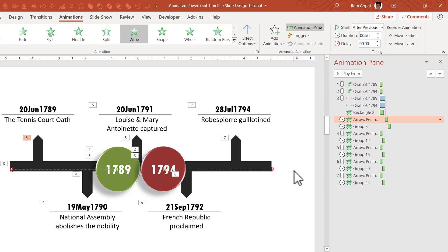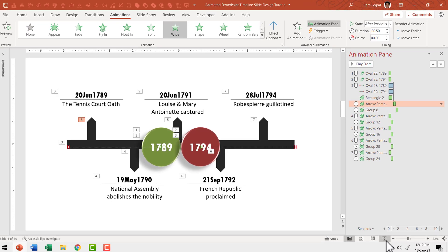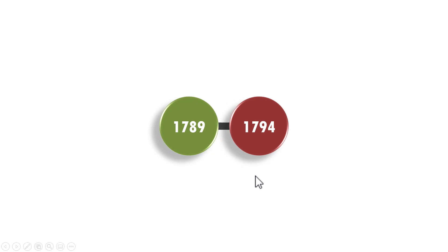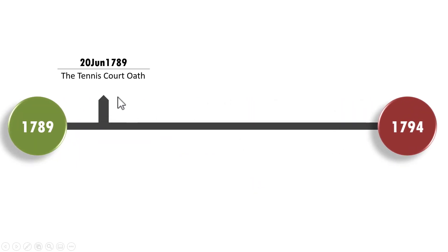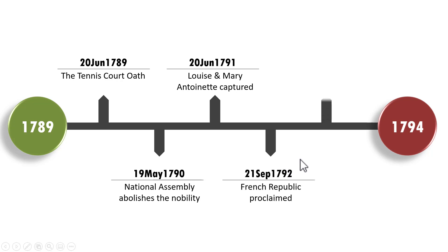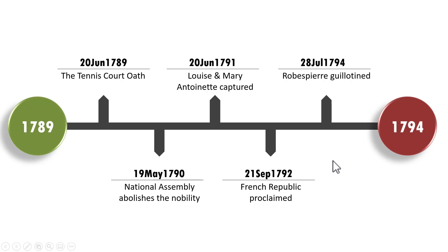Now let us go to slide show and see how this whole thing plays out. On a click, I show the start of the timeline. Then on a click, the end of the timeline. And then on a click, I reveal the timeline and the first event shows itself. Then after explanation, I click again and the next event shows, then the next, then the next, and the final event. This simple purposeful custom animation ensures that your audience stays with your story till the time you finish the slide.